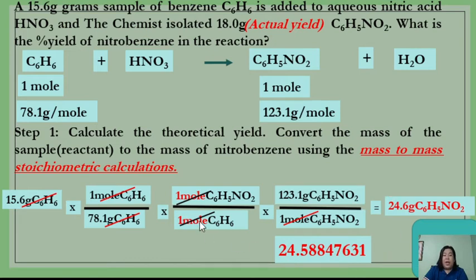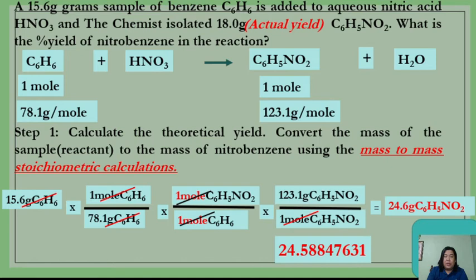If the next digit were less than 5, such as 24.518, the final answer would remain 24.5 — no need to round up. The rule is: if the digit following your last significant figure is 5 or above, round up that last digit; if it is less than 5, retain it as is.